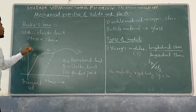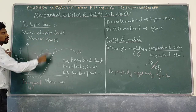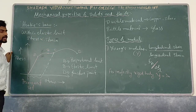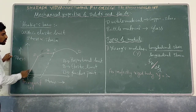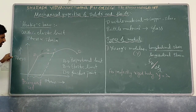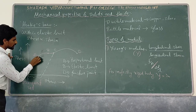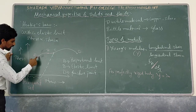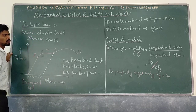Next is Hooke's Law. Within the elastic limit, stress is directly proportional to strain — if stress increases, strain also increases. There is a stress versus strain graph for a wire. At the beginning, stress and strain are directly proportional up to point A, which is called the proportional limit.